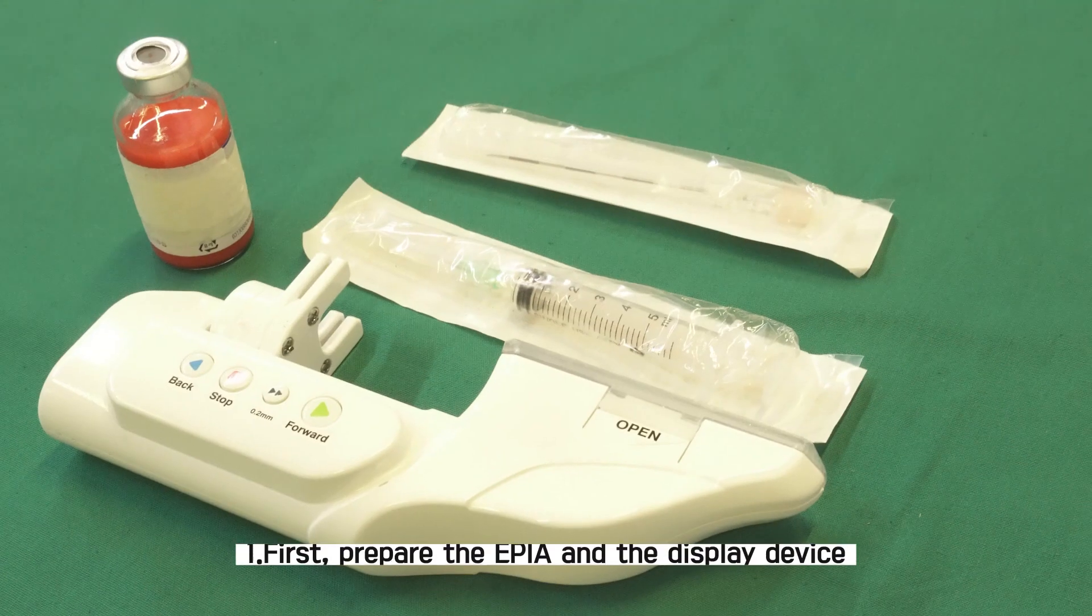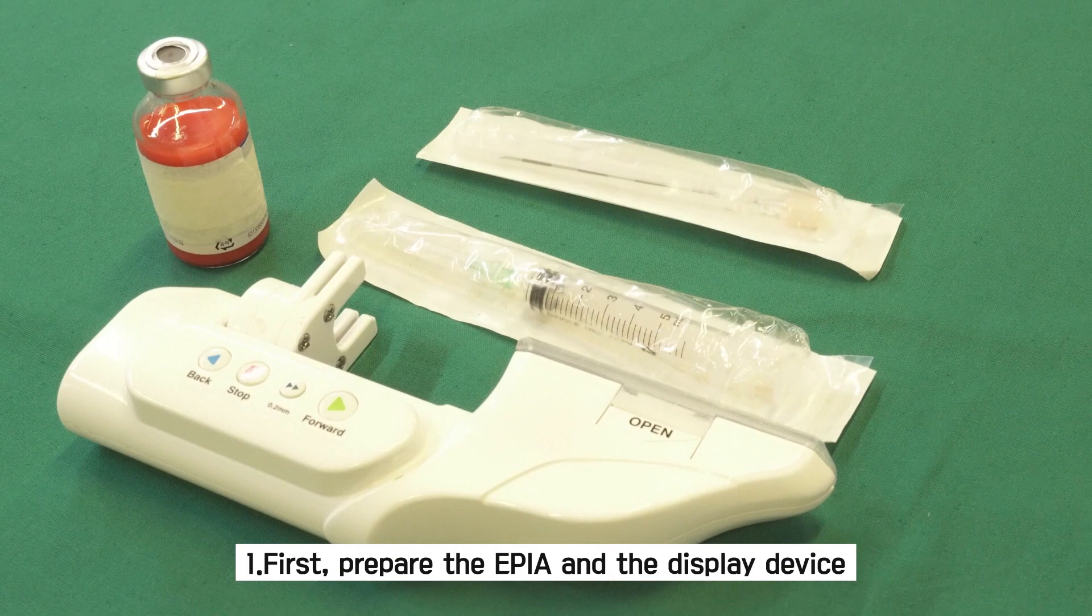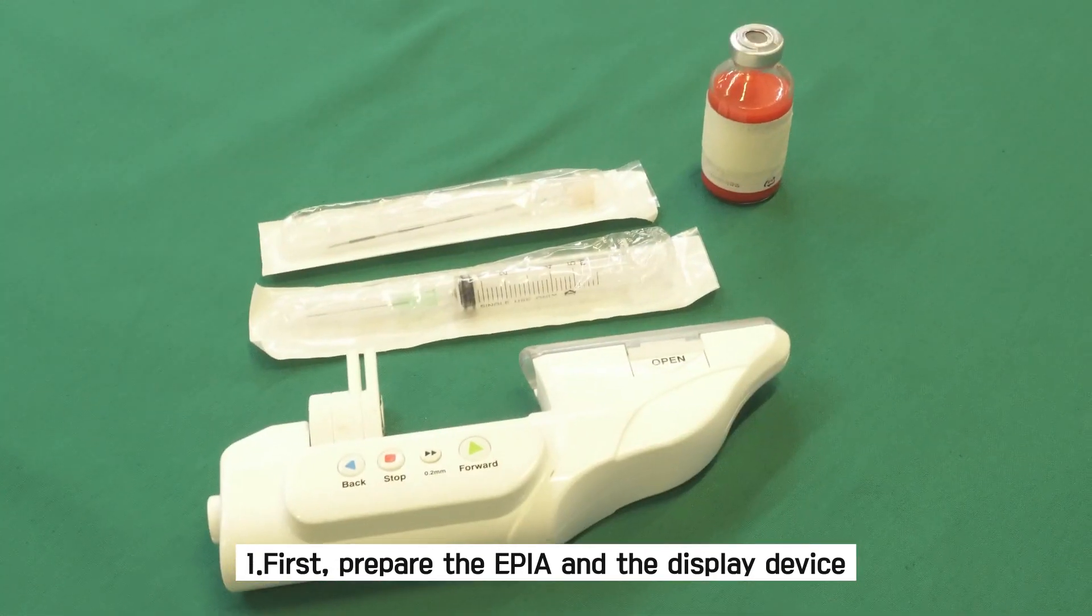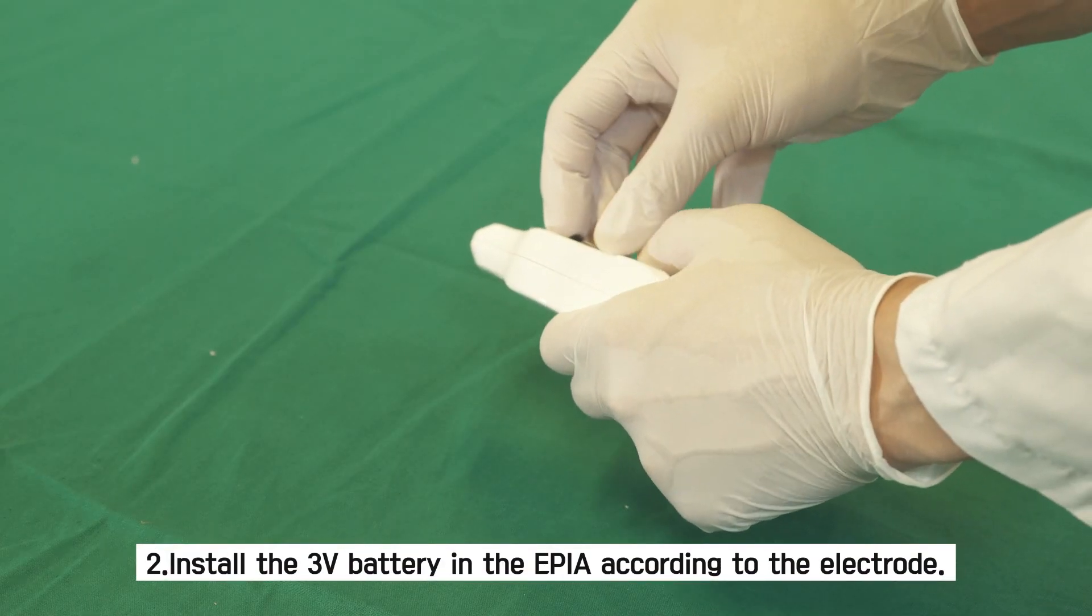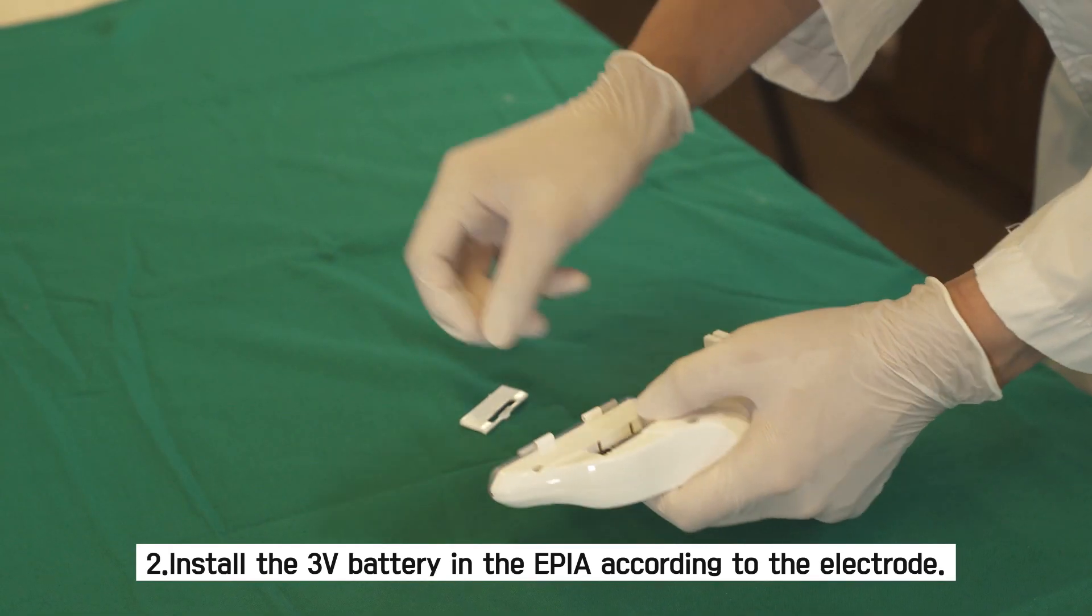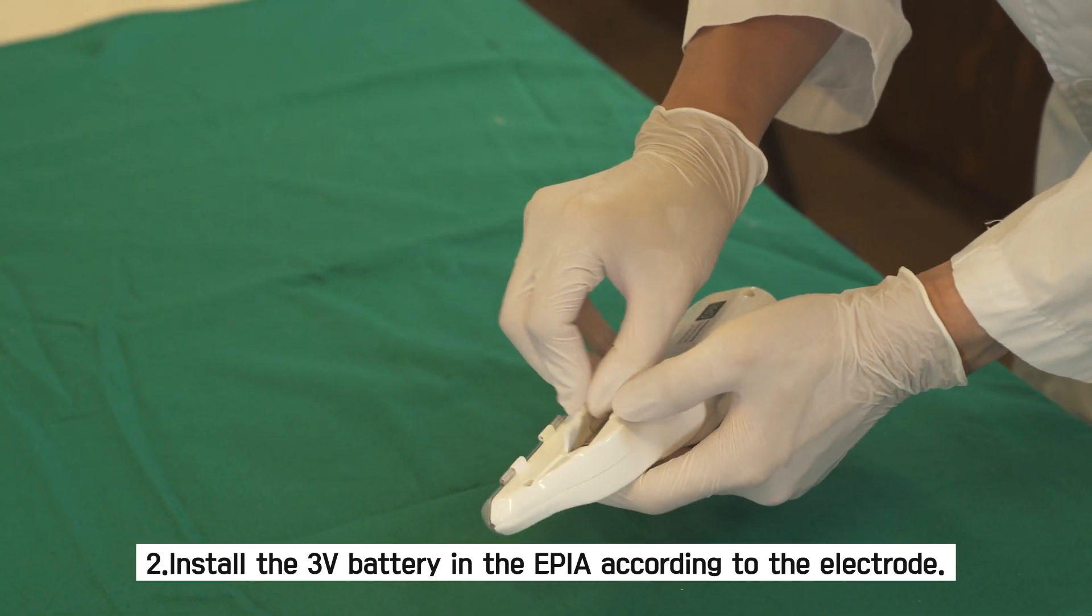Preparation. First, prepare the EPIA and the display device. Second, install the 3-volt battery in the EPIA according to the electrode.